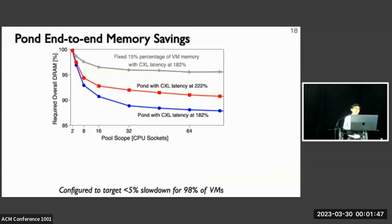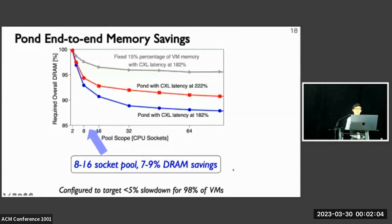In terms of end-to-end memory savings, we evaluate Pond savings under multiple scenarios by defining 5% of performance slowdown targets for 98% of the VMs. At a pool size of 16 or 8 sockets, Pond is able to reduce the overall DRAM requirement by 7% to 9%, while a static allocation approach shown in the gray line only reduces the DRAM requirement by 3%.